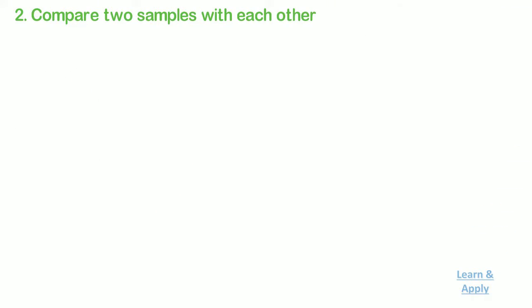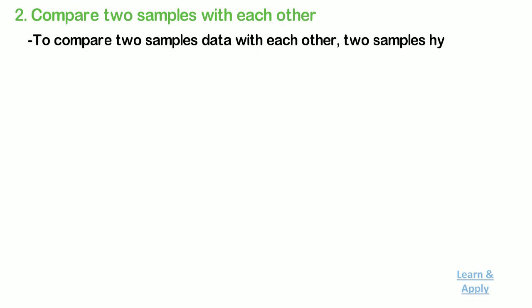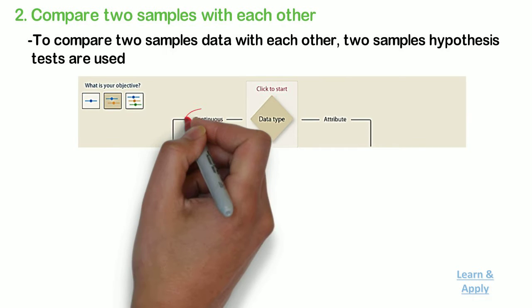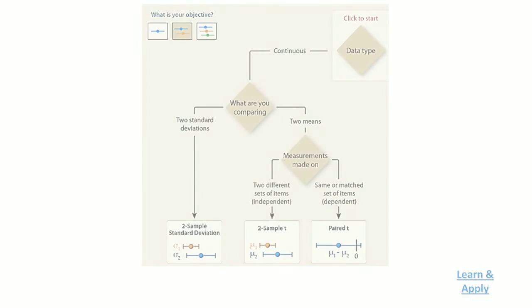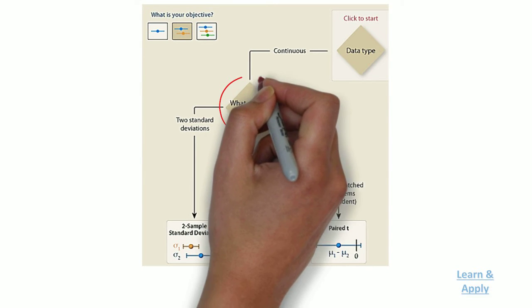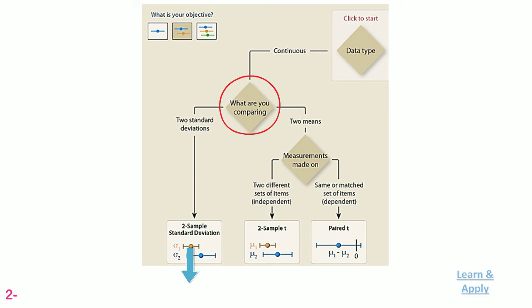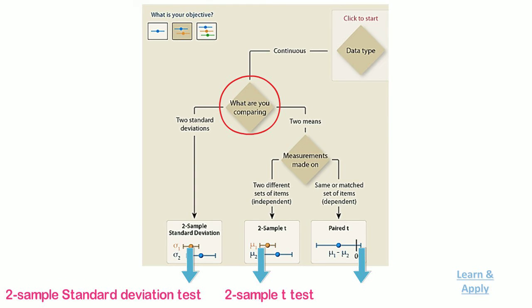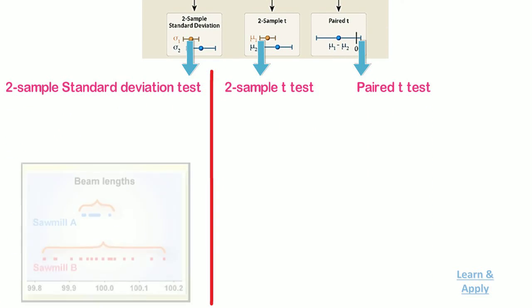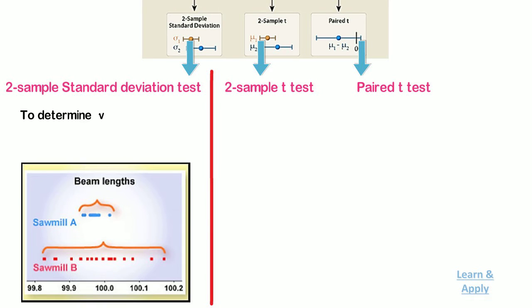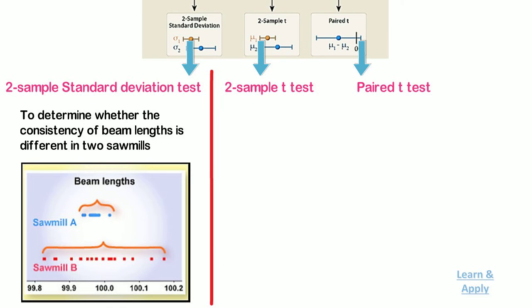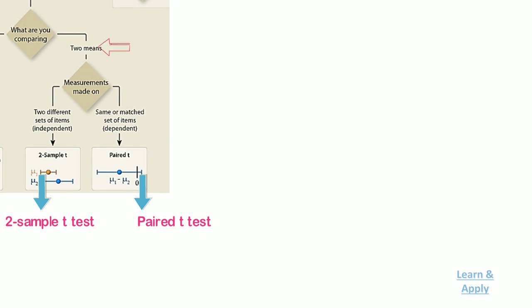The second type is: compare two samples with each other. If you want to compare two samples of data with each other, then two-sample hypothesis tests are used. The first selection criteria for two-sample tests is also the type of data. If the data is continuous, the second selection criteria is: what are you comparing? If you are comparing the standard deviations between two samples, use the two-sample standard deviation test. If you want to compare the means of two samples, use the two-sample t-test or paired t-test. For example, if a distributor measures the length of wooden beams from two sawmills to determine whether the consistency of beam length is different, then he will use the two-sample standard deviation test. But if you want to compare means of two samples, a third selection criteria comes into picture: what were the measurements made on?